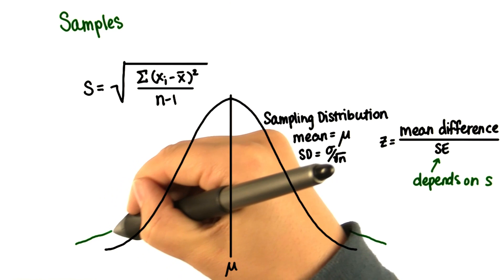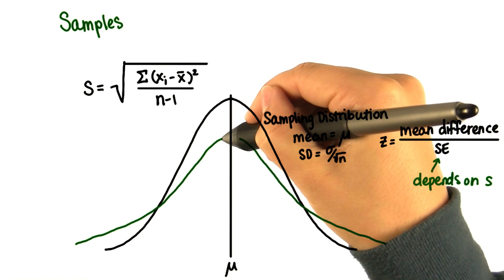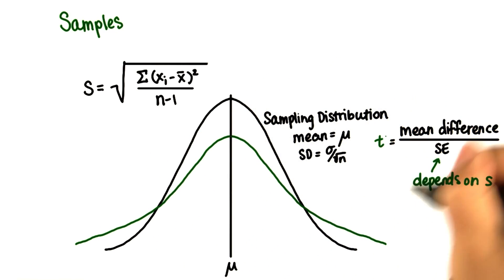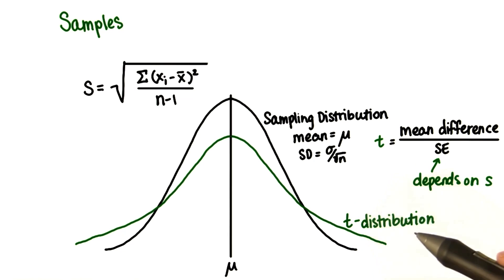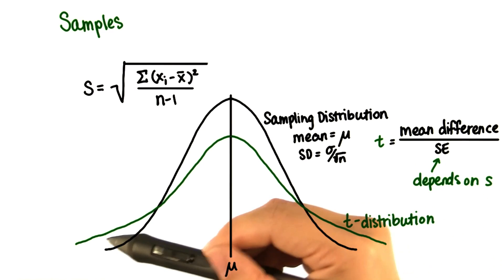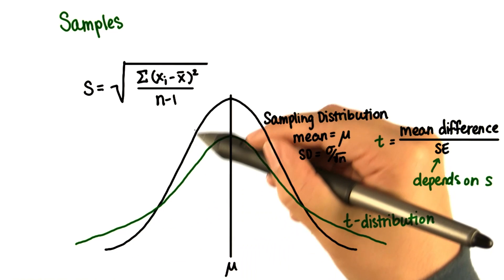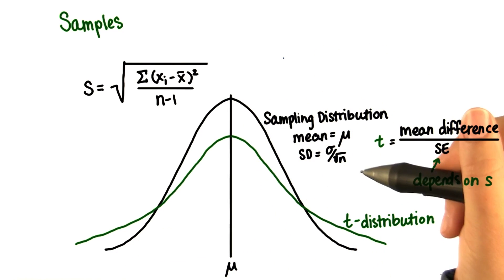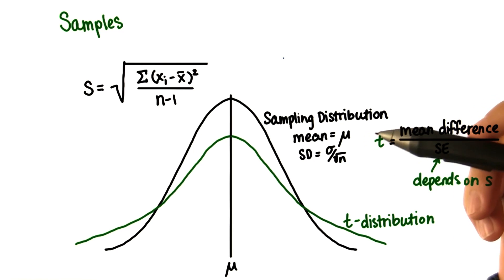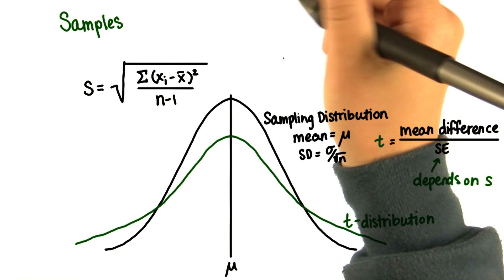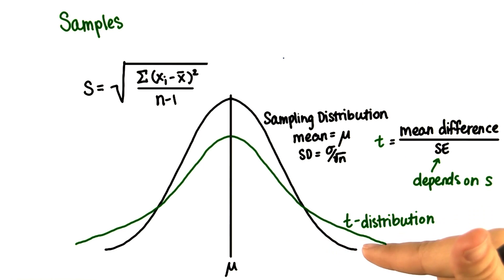Therefore, we end up with a new distribution that is more prone to error. This is called the t-distribution. Since it's more prone to error, it's more spread out and thicker in the tails than a normal distribution. Remember from lesson seven when you learned that larger sample sizes result in skinnier sampling distributions? That same principle applies here.